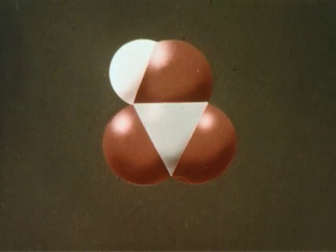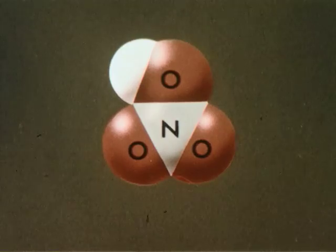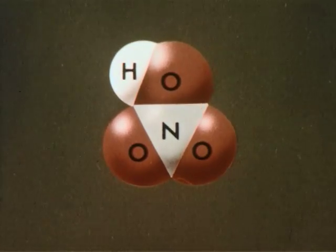A nitric acid molecule, as shown by this model, consists of an atom of nitrogen surrounded by three oxygen atoms with a hydrogen atom attached to one of the oxygens.